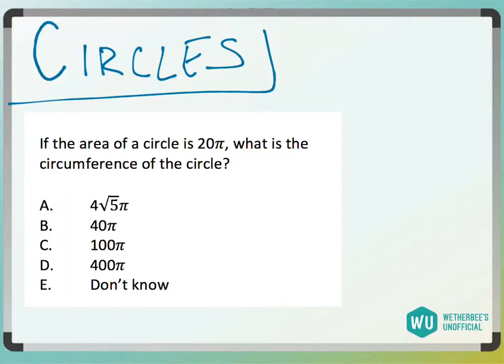We have the area of a circle and we want to know what the circumference is. So area and circumference - area is πr², circumference is 2πr.